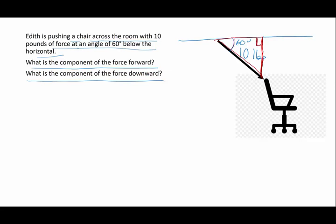This is 90 degrees, 60, and that is 10. This vector, this section of the triangle, is going to be my force forward, and this side of the triangle is going to be my force down.